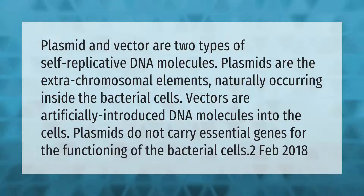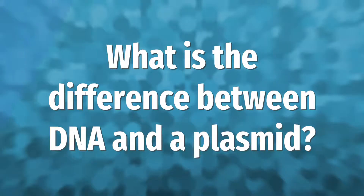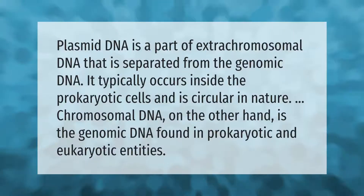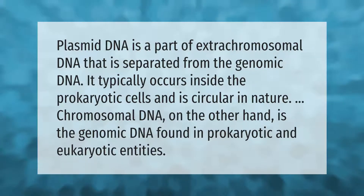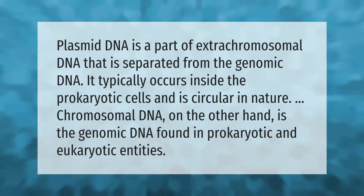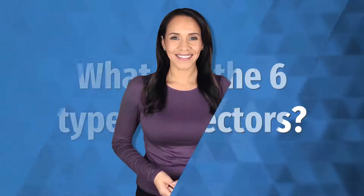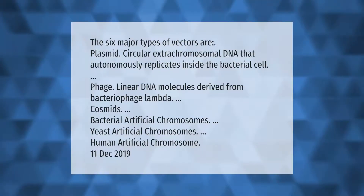Plasmid DNA is a part of extra chromosomal DNA that is separated from the genomic DNA. It typically occurs inside the prokaryotic cells and is circular in nature. Chromosomal DNA, on the other hand, is the genomic DNA found in prokaryotic and eukaryotic entities.